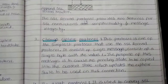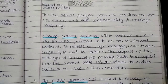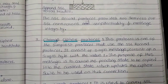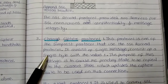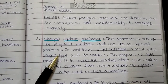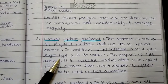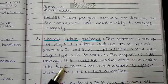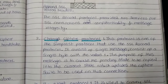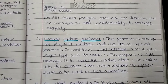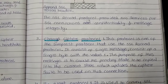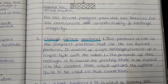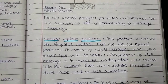The third protocol available with SSL is the change cipher protocol. This is one of the simplest protocols used by the SSL record protocol. It consists of a single message of a single byte with value 1. The purpose of this message is to cause the pending state to be copied into the current state, which updates the cipher suite to be used on this connection.